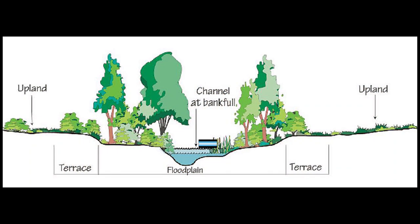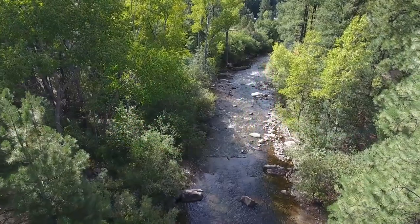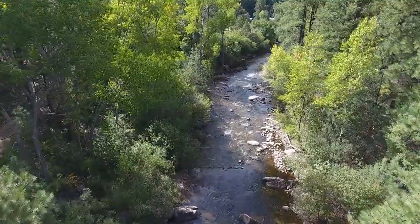Flooding in the springtime or during intense monsoon rainfall during the summer is what makes riparian areas work. The shape of the river channel, allowing rising floods to go out of the banks and into the floodplain, is very important for healthy riparian areas.